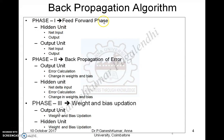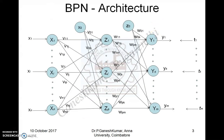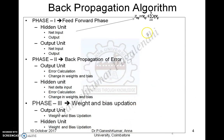In Phase 1, the feed forward phase, the net input to a hidden node is calculated as: Z_inJ = V0J plus the summation from i=1 to n of Xi * ViJ, where V0J is the bias weight and ViJ are the input-to-hidden weights. An activation function is then applied over the net input to produce the output of each node.